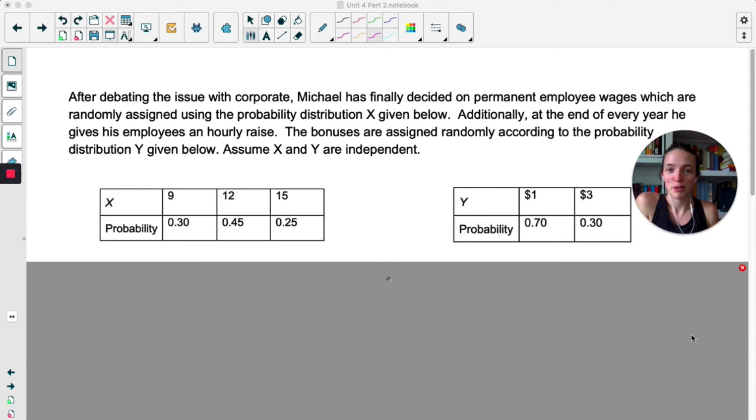Okay, after a debate with corporate, Michael has finally decided on a permanent employee wage which is randomly assigned. Now there's two parts to this. The wage is defined as the X variable, so there's three different wages: there's $9, $12, and $15.